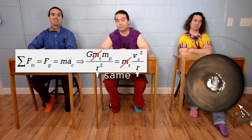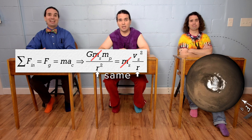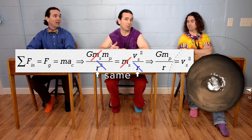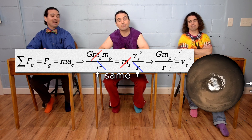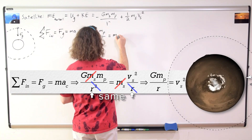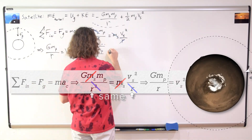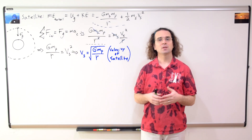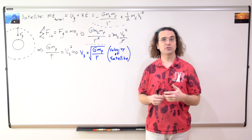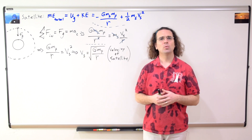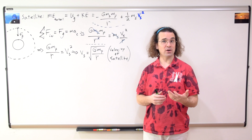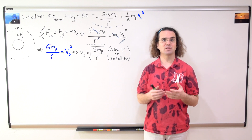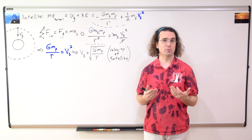Everyone brought the mass of the satellite divided by the radius to the party, and we can solve for the velocity of the satellite in orbit around a planet. Then, going back to the equation for total mechanical energy, we can substitute in for the square of the velocity of the satellite the universal gravitational constant times the mass of the planet divided by the orbital radius.